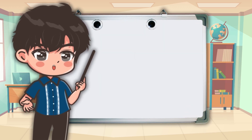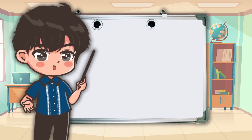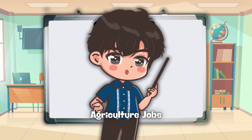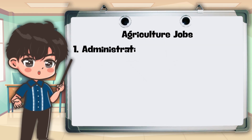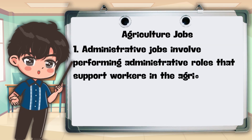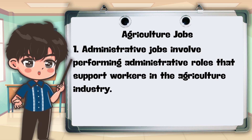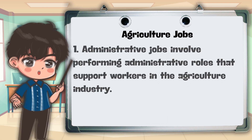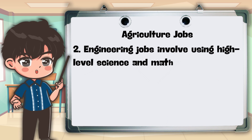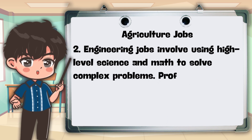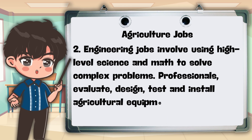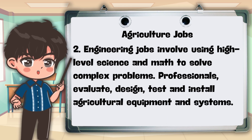Now here are the different types of agriculture jobs or careers. 1. Administrative jobs involve performing administrative roles that support workers in the agriculture industry. 2. Engineering jobs involve using high-level science and math to solve complex problems. Professionals evaluate, design, test, and install agricultural equipment and systems. 3. Labor jobs require workers to perform manual tasks such as planting, harvesting, caring for animals, and maintaining equipment.